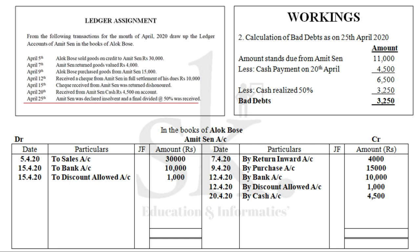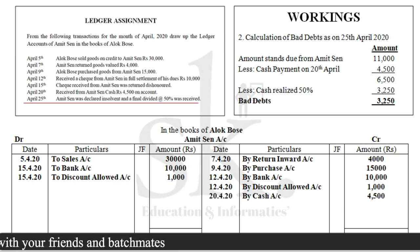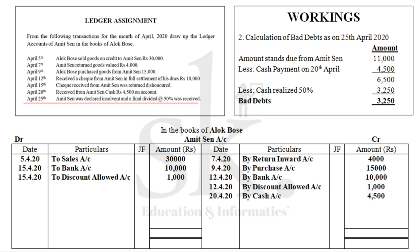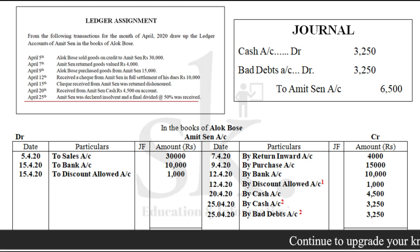Working 2: Calculation of bad debt as on 25th April 2020. The amount due from Amit Sen was Rs 11,000. On 20th April, Amit Sen paid cash Rs 4,500, so 11,000 minus 4,500 equals Rs 6,500 remaining. On 25th April, Amit Sen was declared insolvent and only 50% was received — 50% of 6,500 is Rs 3,250 received as cash, and the remaining Rs 3,250 stands as bad debt. Journal entry: cash account debit Rs 3,250, bad debt account debit Rs 3,250, to Amit Sen account. On the credit side of Amit Sen's ledger, cash Rs 3,250 and bad debt Rs 3,250 are posted, marked as working number 2.